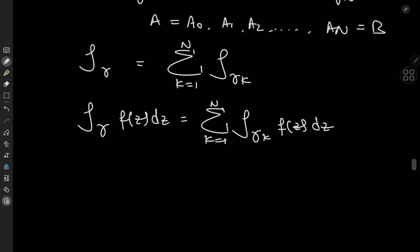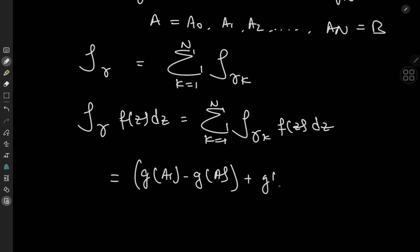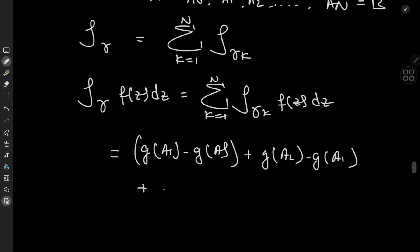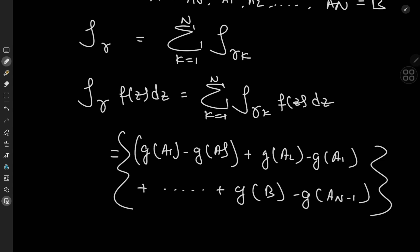Applying the fundamental theorem to each of these curves, for the first curve we get g(a₁) minus g(a₀) — which is just a — plus g(a₂) minus g(a₁), and so on. By the end we have g(b) minus g(aₙ₋₁).